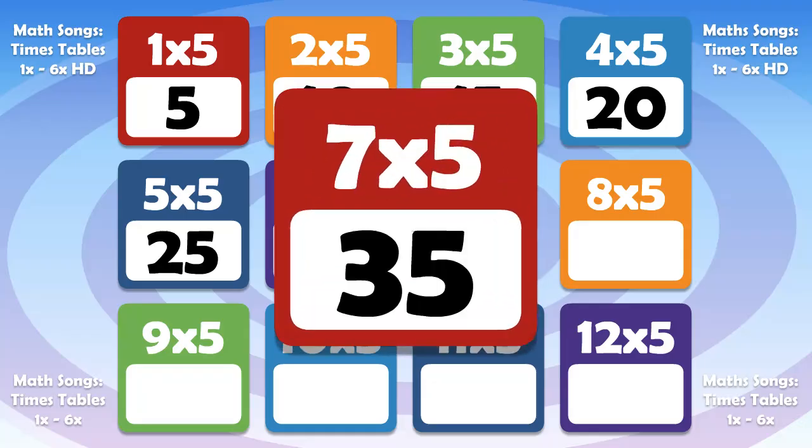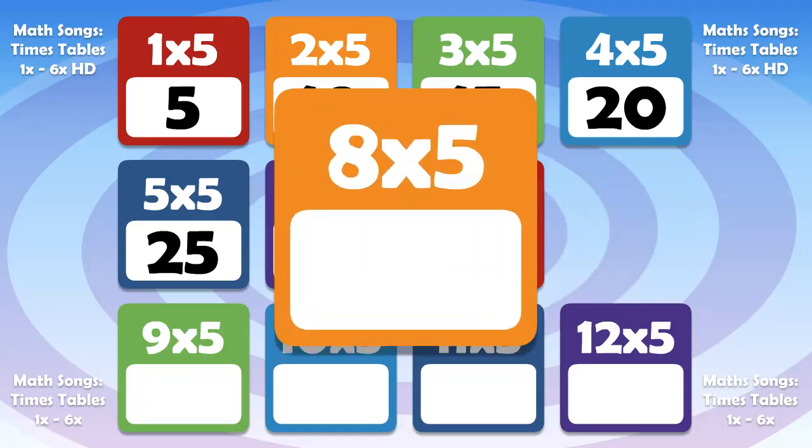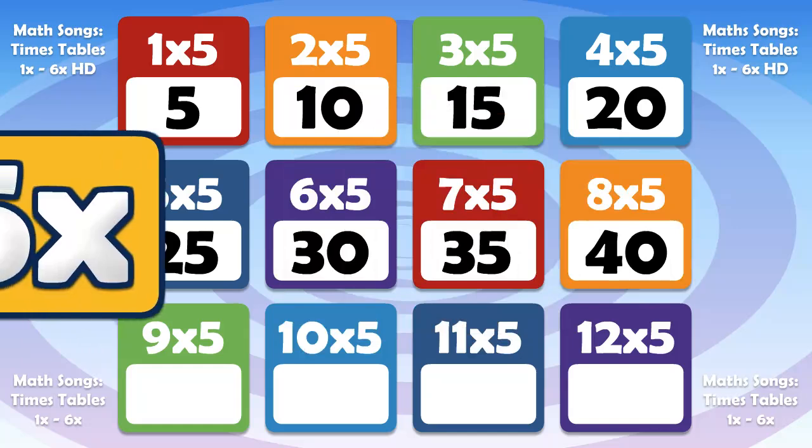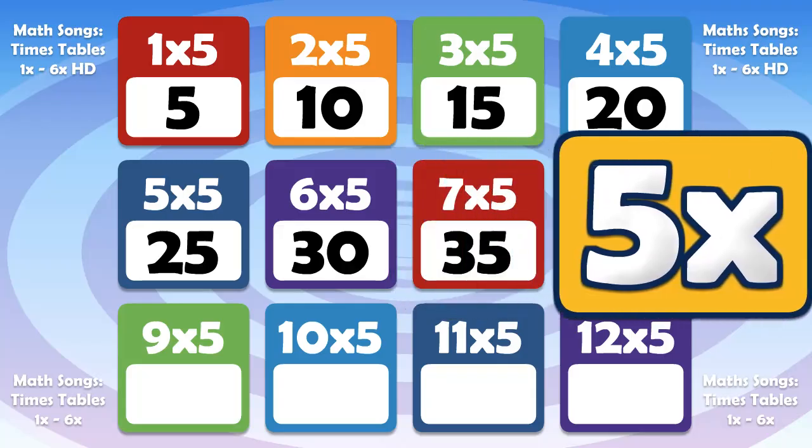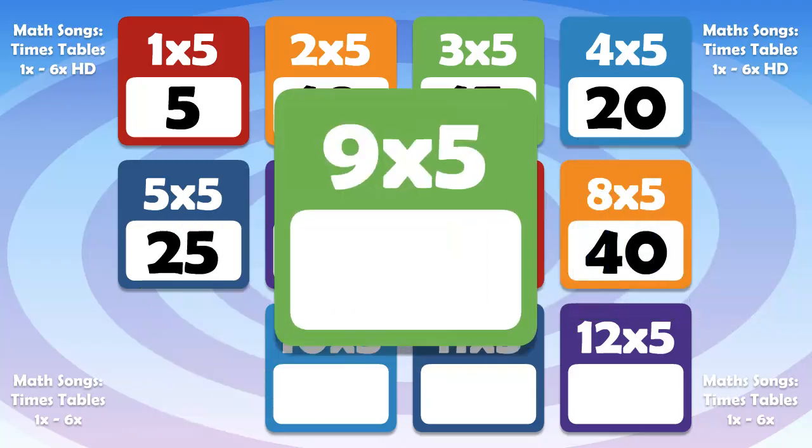7 times 5 is 35, 8 times 5 is 40, 9 times 5 is 45.